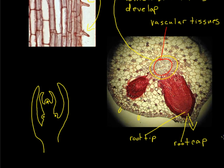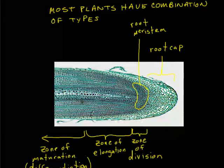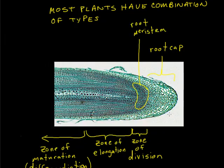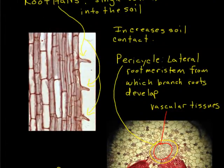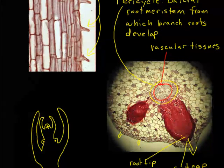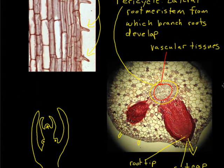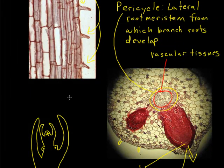So that's the basics of root morphology. You have your zones of development: the root cap protecting the zone of division, then the zone of elongation, followed by the zone of maturation where root hairs develop. Xylem and phloem develop in the heart of the root, and the pericycle develops lateral branch roots that result in the basic network structure of root systems.